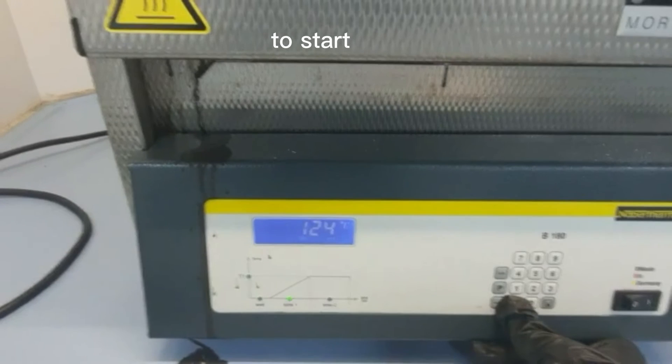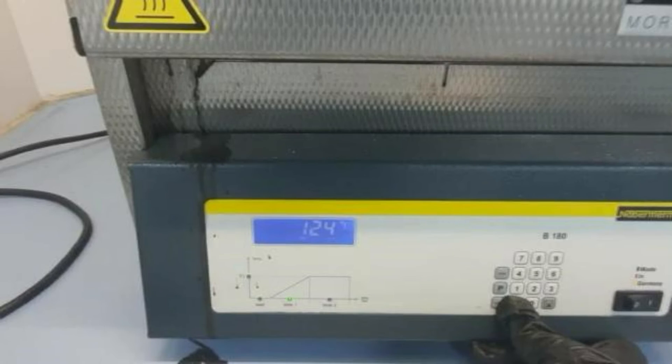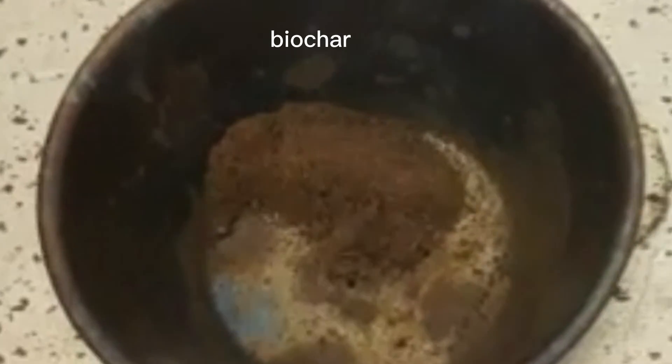Turn on the furnace to start the pyrolysis process. After pyrolysis, we will cool the stainless steel tubes at room temperature. This is the magnetic biochar we have produced.